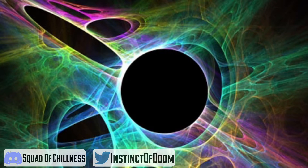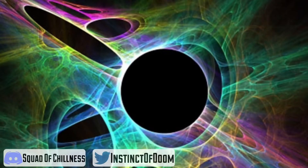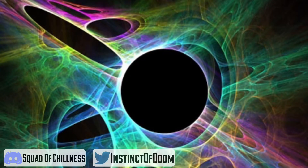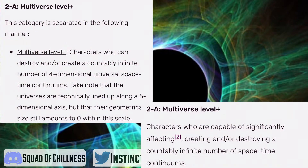Next we get into what is called multi-universal — I personally prefer the term low multiversal. A low multiversal can create, manipulate, or destroy multiple separate universal space-time continuums, up to 1000 — that's what I call mid fourth-dimensional. Full-on multiversal means creating, manipulating, or destroying 1001 and up to more finite separate universal space-time continuums, which I call high fourth-dimensional. Multiversal plus is basically an infinite fourth-dimensional being, able to affect an infinite amount of universal space-time continuums.